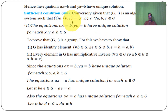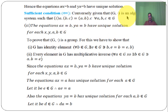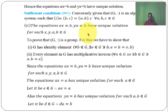In the converse part, given these two conditions, we have to prove that G dot is a group. To prove G is a group, we need to show: closure property, associative property, identity property, and inverse property. The algebraic system already satisfies the associative and closure properties.